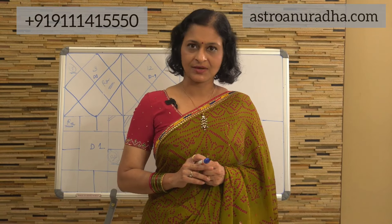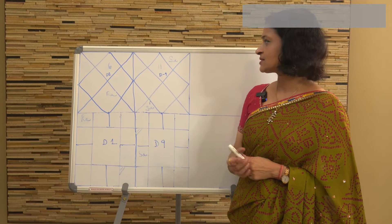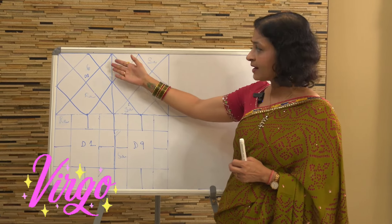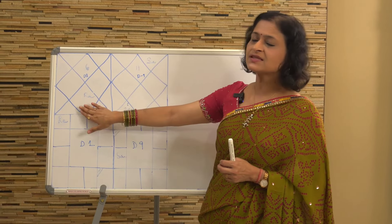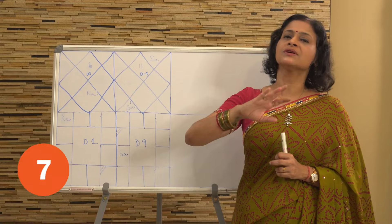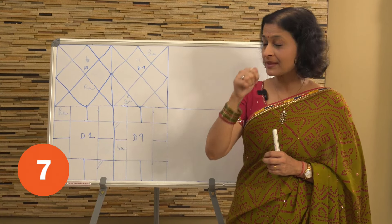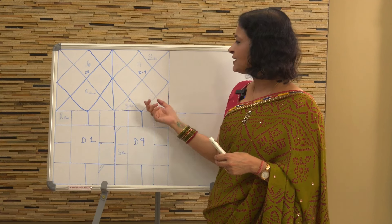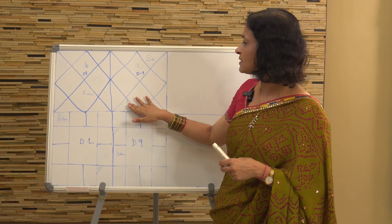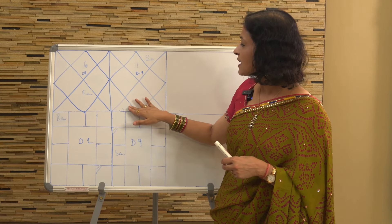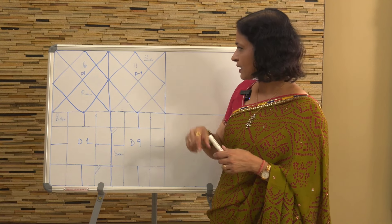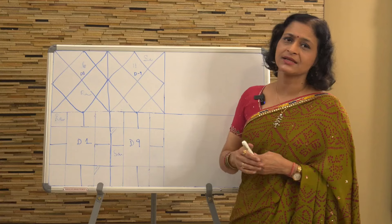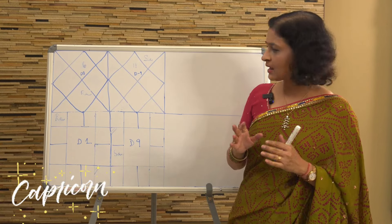We can take up another chart. In this second chart, the lagna is the sign of Virgo and Rahu at this current moment is transiting through the seventh house of the person, which is the sign of Pisces. In the D9, we find that for the person concerned, the lagna is Aquarius and Saturn is placed in the sign of Makar, or Capricorn.